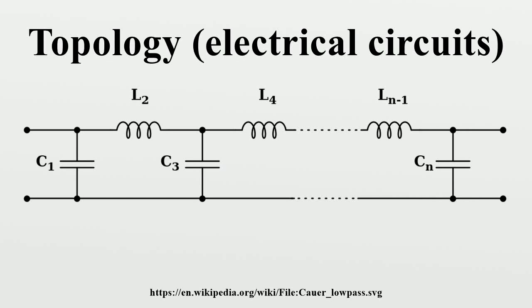The topology of an electronic circuit is the form taken by the network of interconnections of the circuit components. Different specific values or ratings of the components are regarded as being the same topology. Topology is not concerned with the physical layout of components in a circuit, nor with their positions on a circuit diagram. It is only concerned with what connections exist between the components. There may be numerous physical layouts and circuit diagrams that all amount to the same topology.